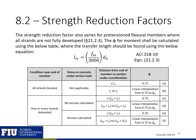Note that strength reduction factors also vary for pre-tensioned flexural members where strands are not fully developed. There is a required transfer length and development length needed to transfer stress from the pre-stressing strand into the surrounding concrete. If we're within this transfer or development distance, we need to further reduce our phi factor. We can use the provided table to calculate the reduced phi factor based on our location within the transfer length, noting the distinction between all strands bonded versus one or more strands de-bonded.